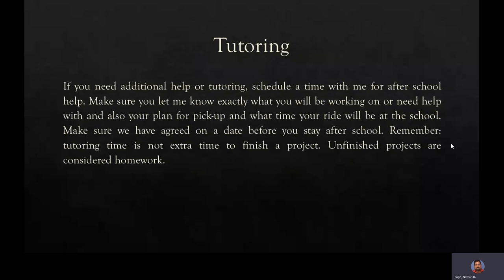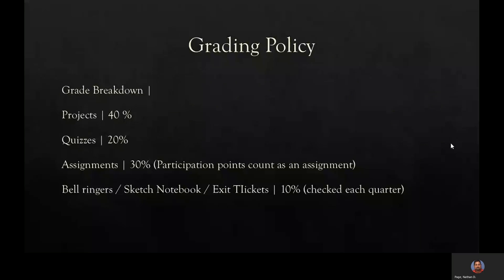Remember, tutoring time is not extra time to finish a project — unfinished projects are considered homework. My grade breakdown is: projects are 40%, quizzes are 20%, assignments are 30%. Students receive 25 points of participation each quarter — 100 points for the year — and those count as an assignment. Bell ringers, sketch notebooks, and exit tickets are 10% of the grade, and sketch notebooks are checked each quarter.